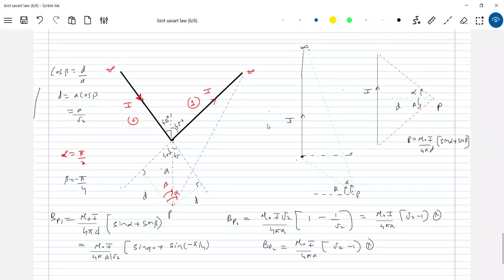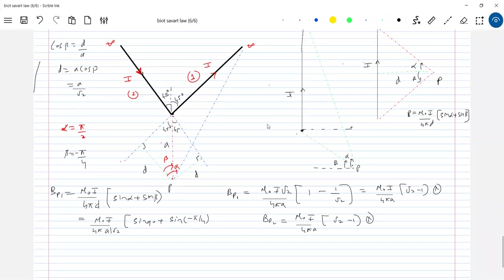μ₀I/(2πa) × (√2 - 1), it will be into the plane. Here a charged particle is taken and projected—then in what direction will it deflect? Go back to the motion of charged particle in a magnetic field; that concept is what you should apply here. Okay, tomorrow I'll continue from here. Okay, thank you, love you.